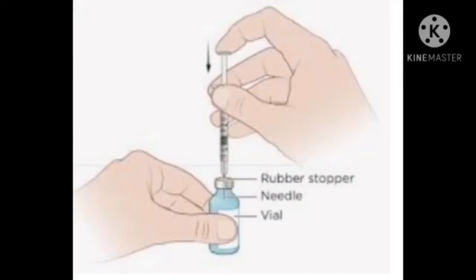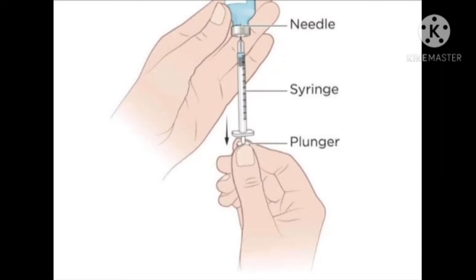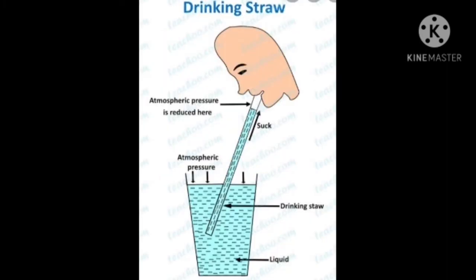A doctor's syringe also works on air pressure. When the plunger is pushed inwards, air goes out of the syringe creating low pressure inside. Pull the plunger out and the air pressure acting on the liquid in the bottle pushes liquid into the syringe through the needle. Similarly, when you drink through a straw, the air present within the straw is removed creating low pressure, and air pressure on the liquid in the glass forces the liquid to rise up in the straw so we are able to drink.